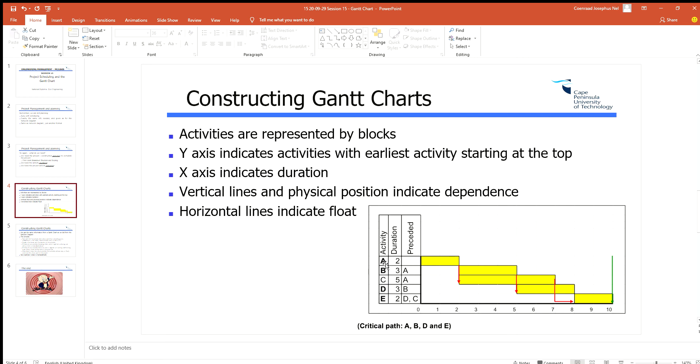If you look at this over here, you say activity A does not have a predecessor, that's why activity A starts on zero. It's got a duration of two, so it's one, two blocks, that's why the yellow block is there. Activity B has a duration of three and you need A to be finished, so you start activity B when activity A finishes. It's got a duration of three: one, two, three. There's your yellow block.